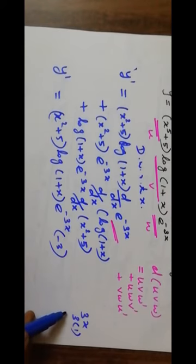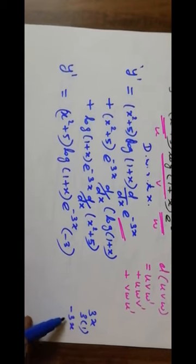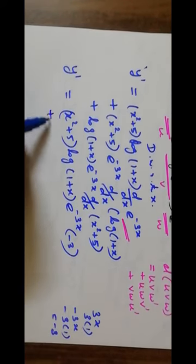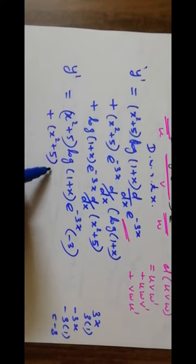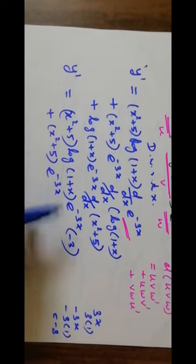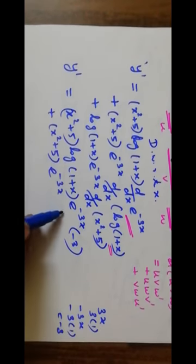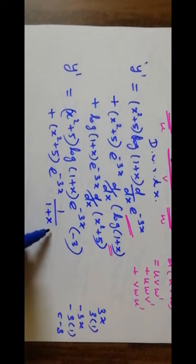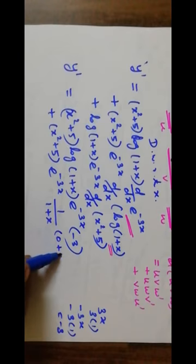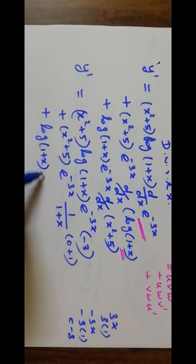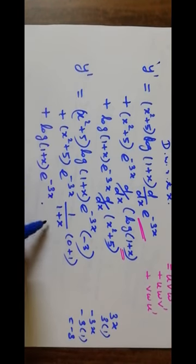e power minus 3x into minus 3, because the derivative of minus 3x is minus 3. This is the differentiation. Then plus x squared plus 5, then e power minus 3x. So log of 1 plus x, then e power minus 3x.